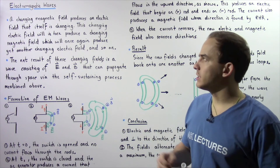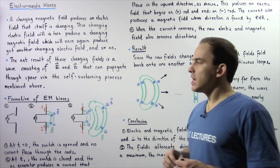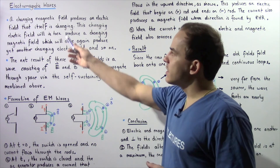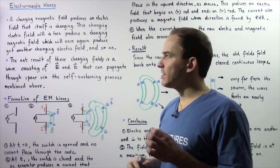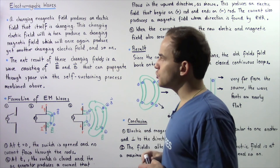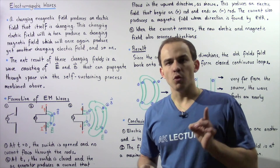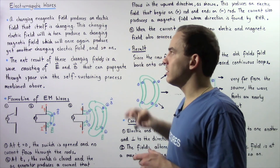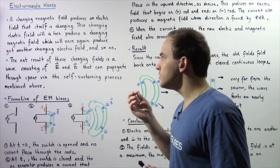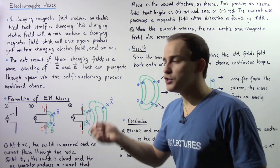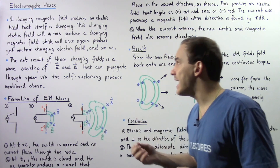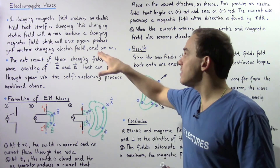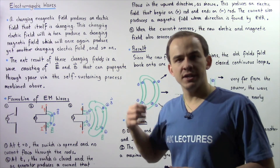Let's begin our discussion on electromagnetic waves. Recall that a change in magnetic field will produce an electric field that itself will also change over time. This changing electric field will in turn produce a change in magnetic field, which will once again produce yet another changing electric field, and this process will continue.